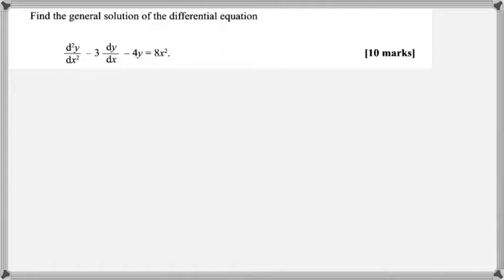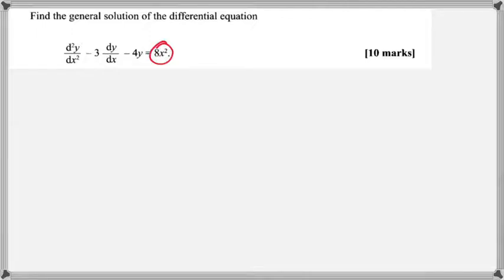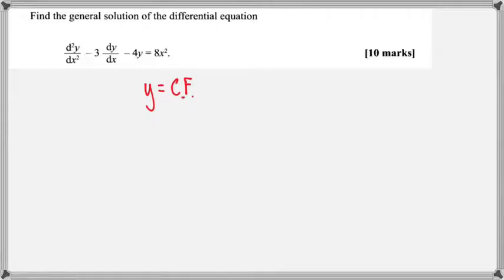In this case, it is non-homogenous because it is equal to a function. If it was equal to 0, then it would have been a homogenous second-order differential equation. But in this case, it's equal to 8x². So, to find the general solution for this second-order non-homogenous differential equation, it will be of the form y = CF, where CF is your complementary function, plus your PS — or sometimes they call it the PI — your particular solution or particular integral.